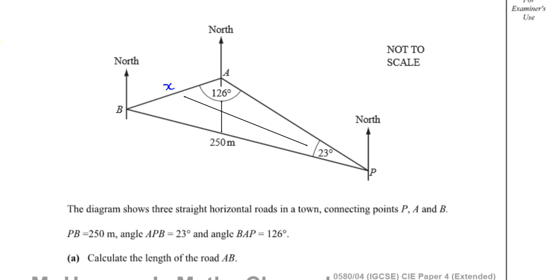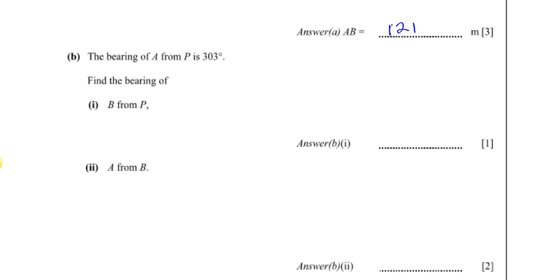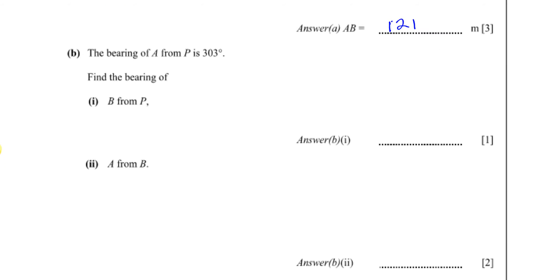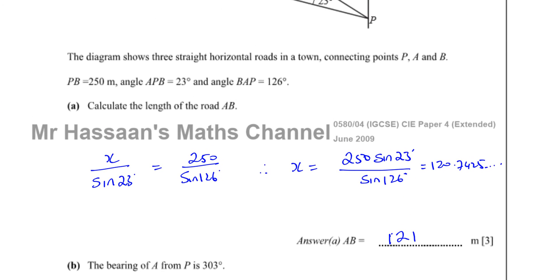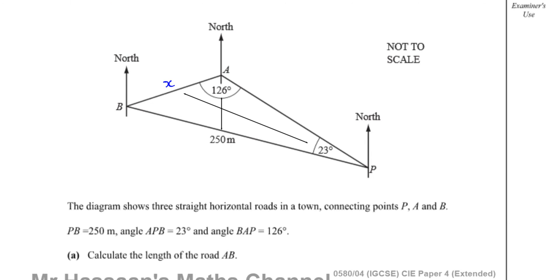That's the answer for part A. Now part B is about three figure bearings. Many students don't understand how to deal with three figure bearings, so I'm going to explain this in more detail than these three marks actually require. The bearing of A from P is 303 degrees.